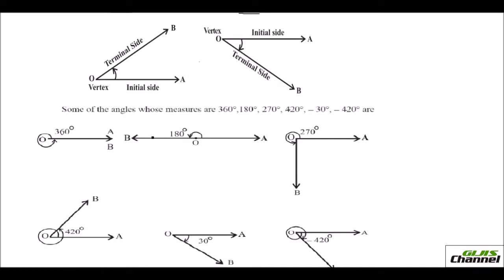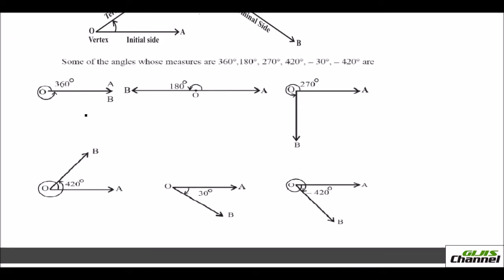Let us see some of the angles given here. For 360 degrees, it is one full rotation. Your initial side is OA and the terminal side will make a full complete rotation and the terminal side falls on the initial side. So your initial side and the terminal side are one and the same. That is why I have marked A and B at the same point.